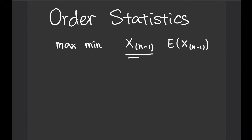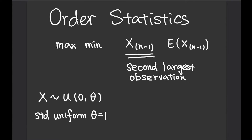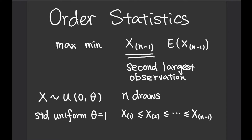Remember that x_(n-1) is also the second largest observation from the n samples that we have. So let's state the problem clearly. We have a variable that follows a uniform distribution, with zero being the minimum and theta being the maximum. If you are interested in the standard uniform, then your theta would just be 1. We take n draws from this uniform distribution, giving us n observations ordered with the smallest being x_(1), the second smallest being x_(2), the second largest being x_(n-1), and the largest being x_(n).